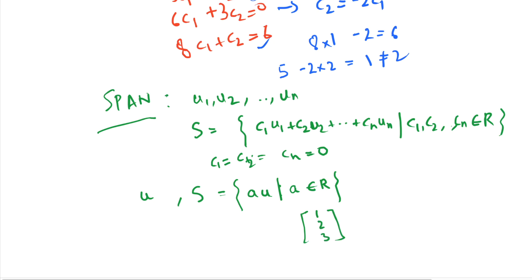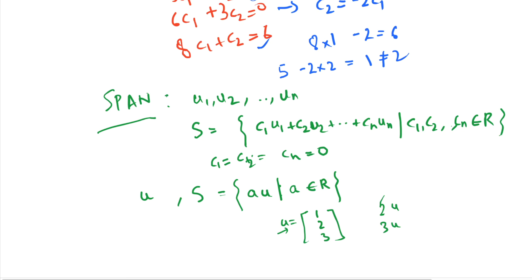span of this vector u will be all the scalar multiples of [1, 2, 3]. So it will be 2 into u, 3 into u, where this number can be anything.